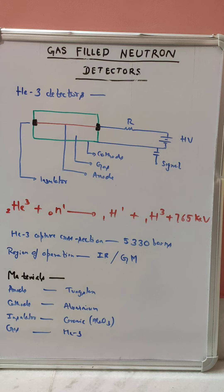Now we will see the capture cross section of helium-3, that is 5330 barns, where one barn is equal to 1 × 10^-24 cm². If we convert it into meter square, then 1 × 10^-28 m². The region of operation of helium-3 detector is mostly ionization region.